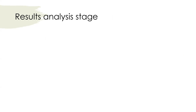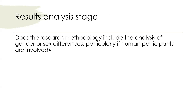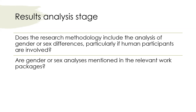At the result analysis stage of primary and secondary data, consider the following: Does the research methodology include the analysis of gender or sex differences, particularly if human participants are involved? If your research includes human participants, it's highly likely you need to include analysis by sex or gender — and you shouldn't just mention it in passing as a control variable, but tie it to one of your project's objectives, which means making at least one objective gender-sensitive. Also check that gender or sex analysis is mentioned in the relevant work packages, and that expected project outcomes and impacts consider potential differentiated effects by gender or sex.